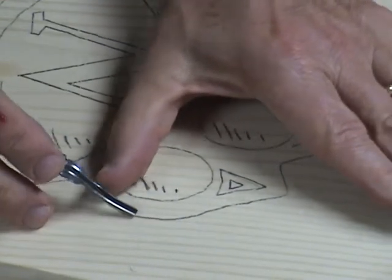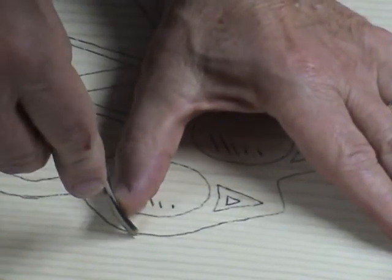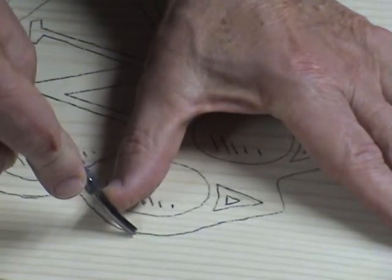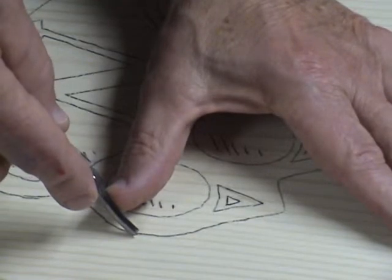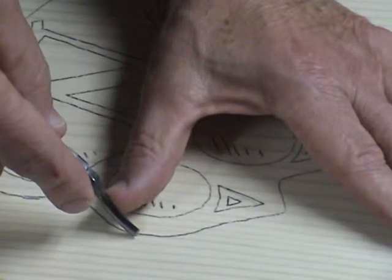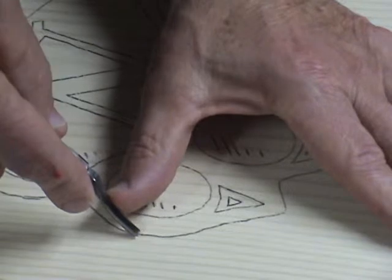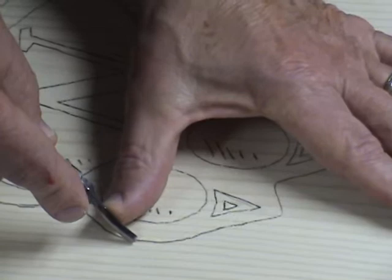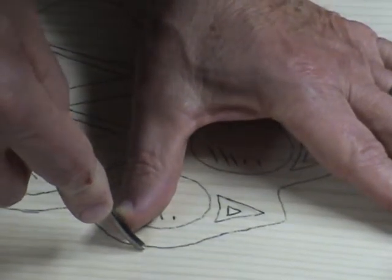I'm going to take - notice how I've got my left hand. I've got my thumb on the blade so I can help kind of control it. As you get more experience, you will be able to feel whether or not the gouge is going to flip out and go where it doesn't want to go, because you can hurt yourself if you're not careful.